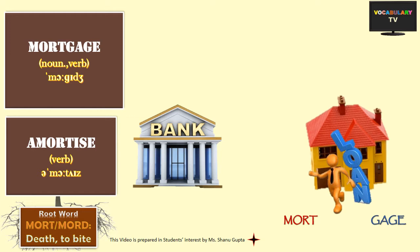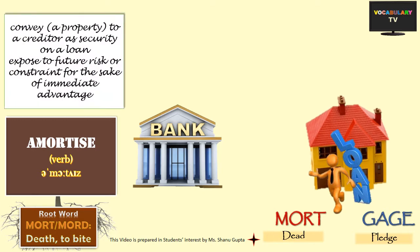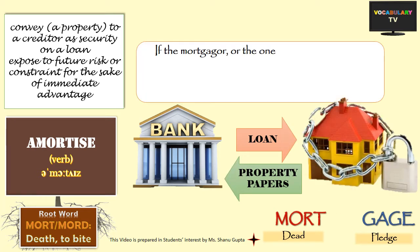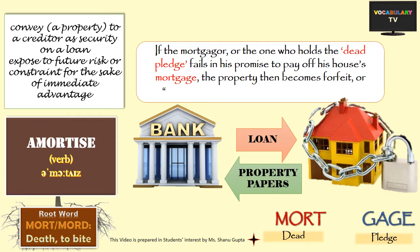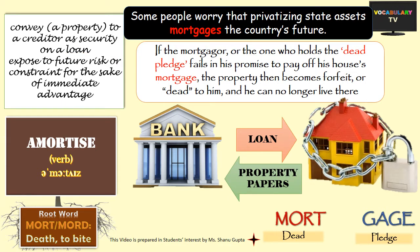Next we have the dreadful-sounding term 'mortgage', which literally means 'debt pledge'. When a person conveys his property, such as his house, to a creditor such as a bank as security on a loan, he is said to have mortgaged his house. A mortgage is called that way because if the mortgager fails in his promise to pay off his mortgage, the property is forfeited to him and he can no longer live there. The mortgager gets back his property papers only when the debt is paid off. In an extended meaning, 'mortgage' can be used when we expose something to a future risk or constraint for the sake of immediate advantage — for example, some people worry that privatizing state assets mortgages the country's future.